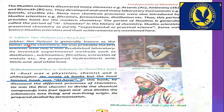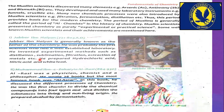Jabir bin Hayyan, 721 to 803 AD, is generally known as the Father of Chemistry. He was probably the first scientist who had a well-established laboratory. He invented experimental methods such as distillation, sublimation, filtration, and extraction of metals, etc.